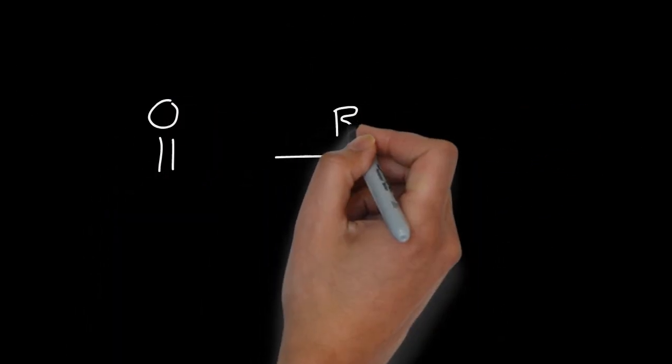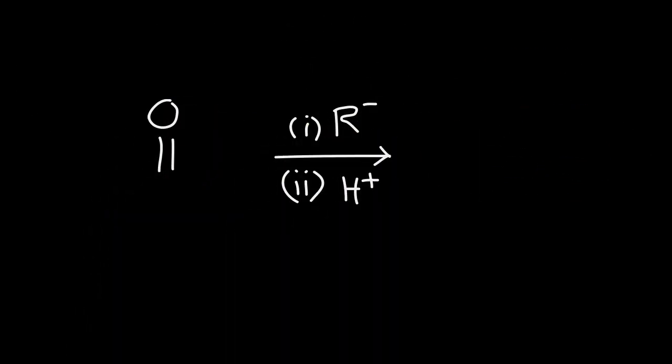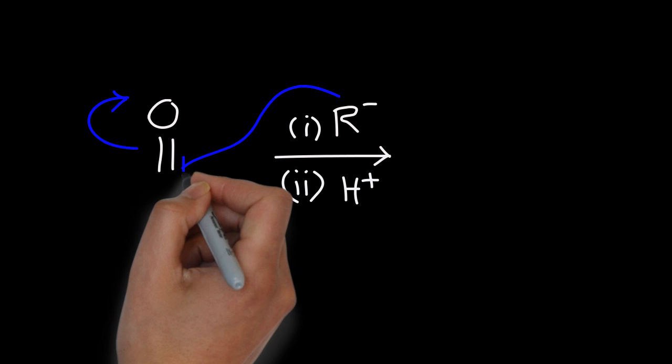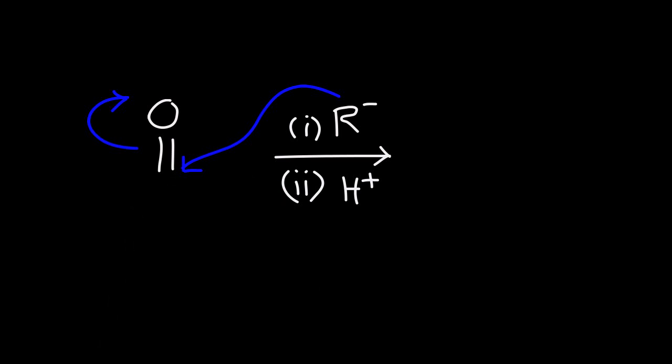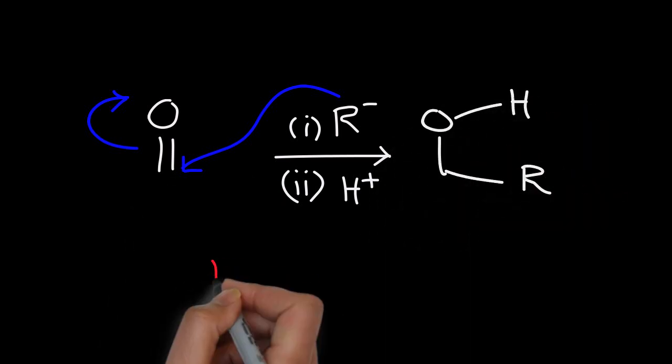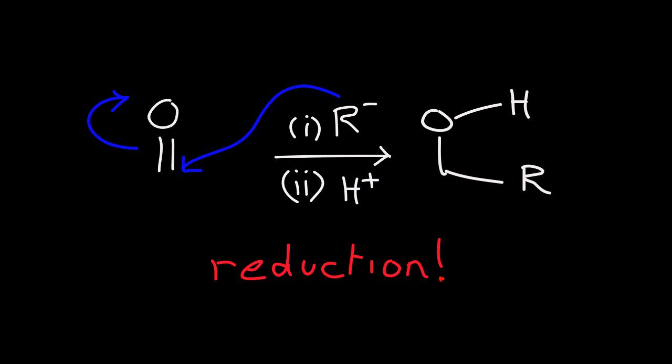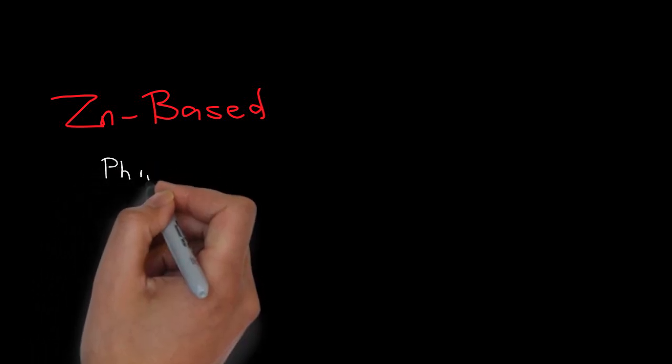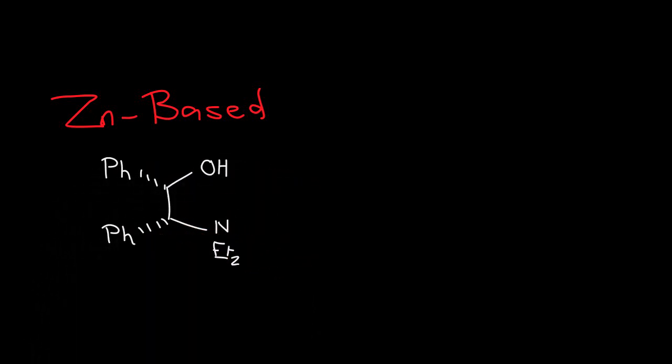It's unconventional to refer to addition of nucleophilic organometallics to carbonyls as reductions, but they are reductions of a C=O to a C-C bond. There's a set of reactions of this type that involve nucleophilic organozinc reagents in the presence of amino-alcohol ligands to add enantioselectively.